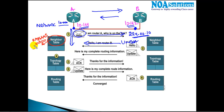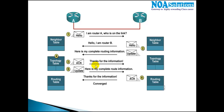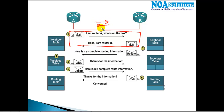Based on these hello messages, they build a table called the neighbor table and they become neighbors of each other. You can verify the neighbor table using 'show IP EIGRP neighbors'. The first step is sending a hello, receiving a hello reply, and then forming the neighbor relationship.